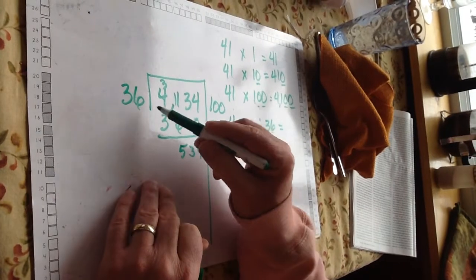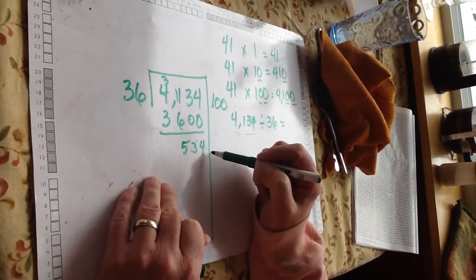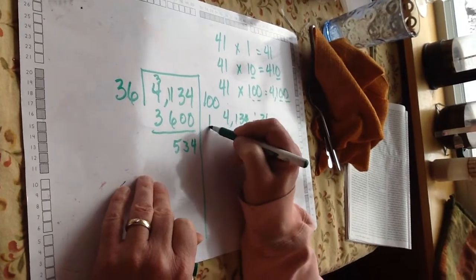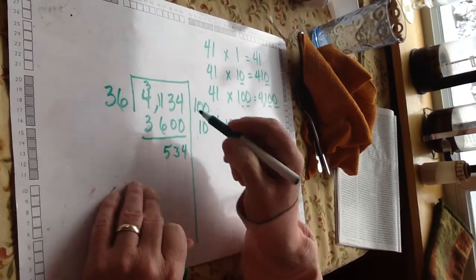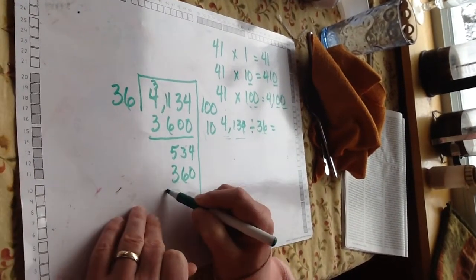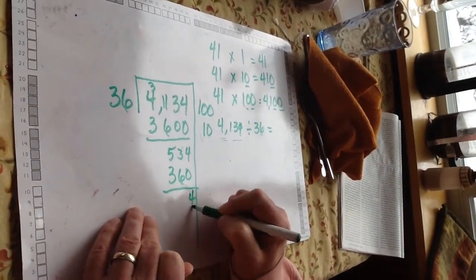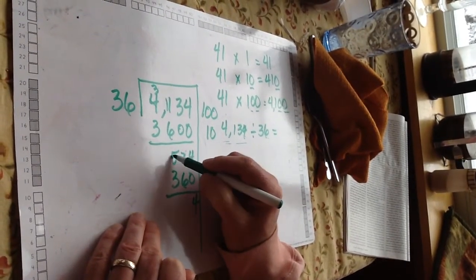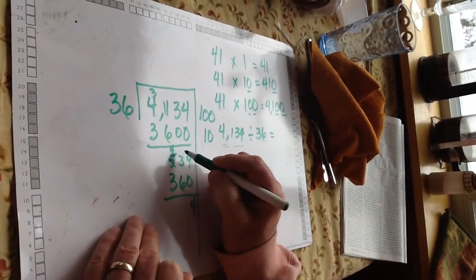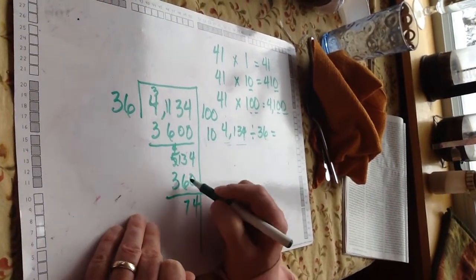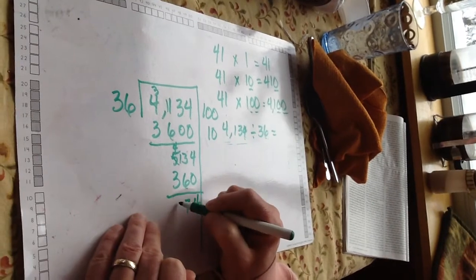And now we're working with a much smaller number. Now, if we remember, 10 groups can fit in there. 10 times 36 is 360. Subtract. I can't take 6 from 3, I'm going to have to borrow. Borrow a group of 10. 6 from 13 is 7, and 3 from 4 is 1.